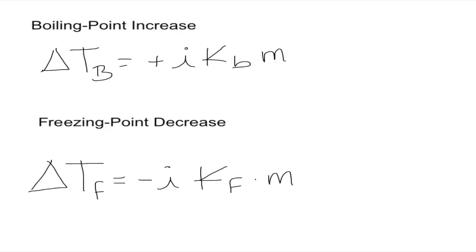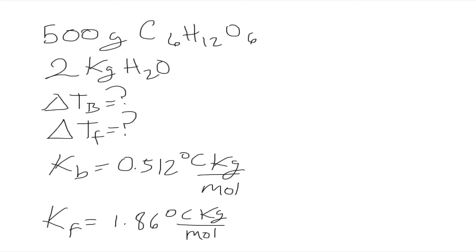The problem states that we have 500 grams of a solute that is molecular C6H12O6, and we put it in a solvent — in this case water — with two kilograms of water. The question asks for the new boiling point and the new freezing point of the solution, given that we know the Kb and Kf of water.